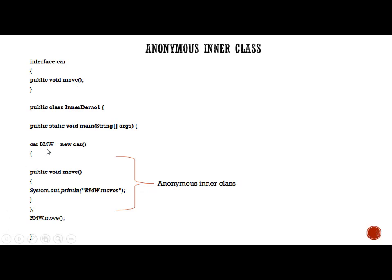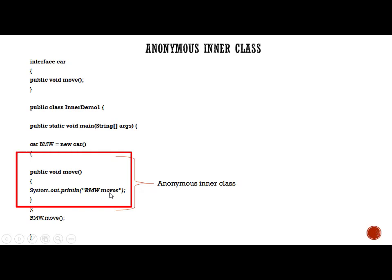In the main function, I create an object called bmw of the car interface with a constructor, but instead of terminating with a semicolon I keep the body open — this is a class definition. Inside it I override the move method, printing 'BMW moves', then terminate the class and the statement with a semicolon. Using the bmw object I call the move method. Since this class has no name or identity, we call it an anonymous inner class.